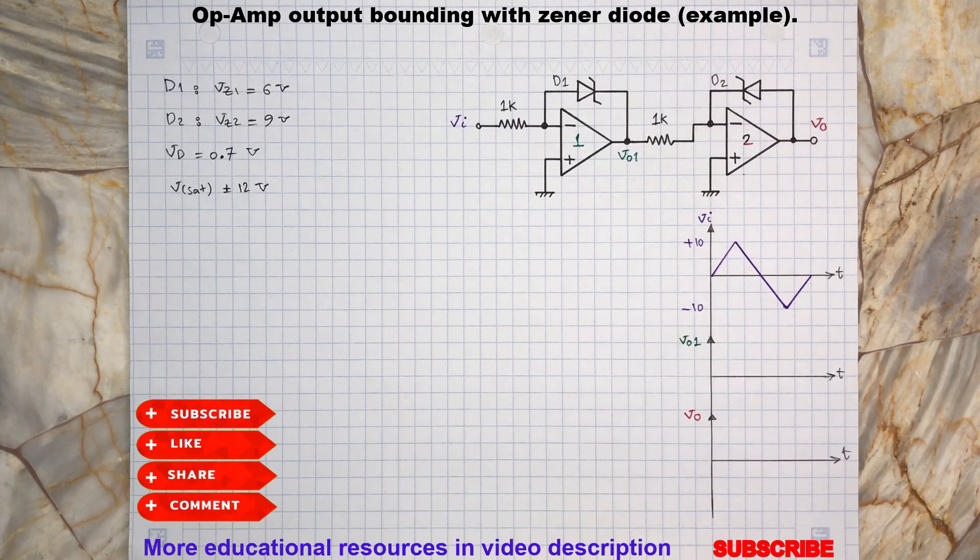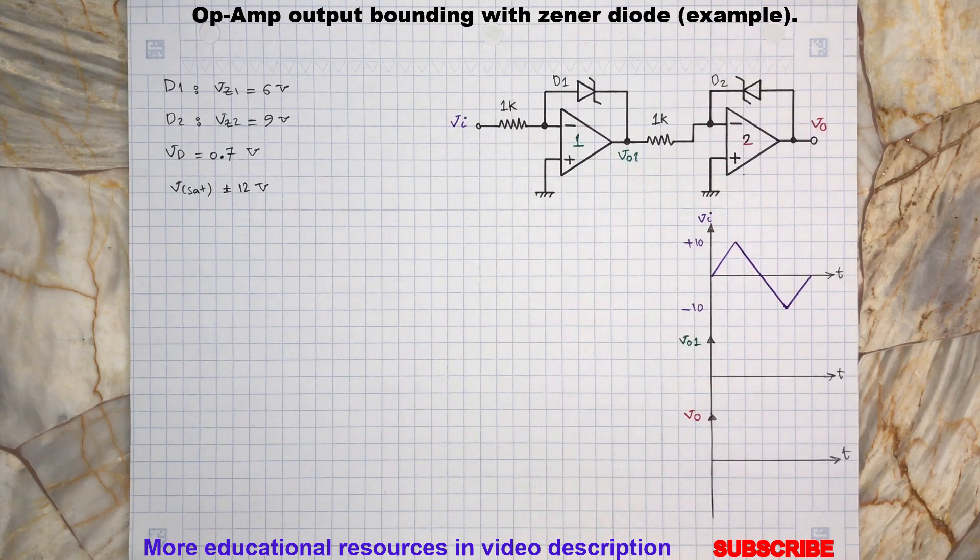Hello, today we are going to review this output bounding circuit. Without further ado, let's focus on the first stage op-amp and D1, and begin by assuming the input voltage to this op-amp is positive.